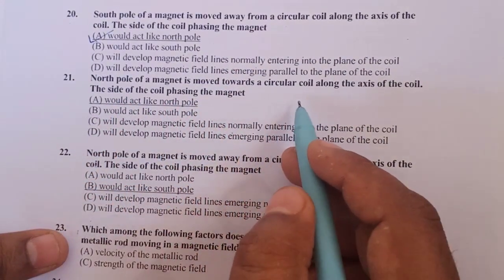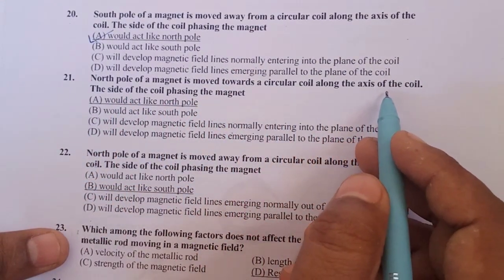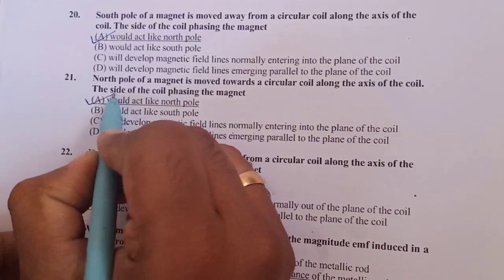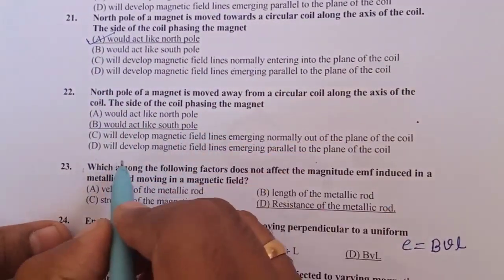North pole of the magnet is moved towards the circular coil along the axis. The side will produce a north pole in order to oppose it. When it is taken away it will produce a south pole to attract it.